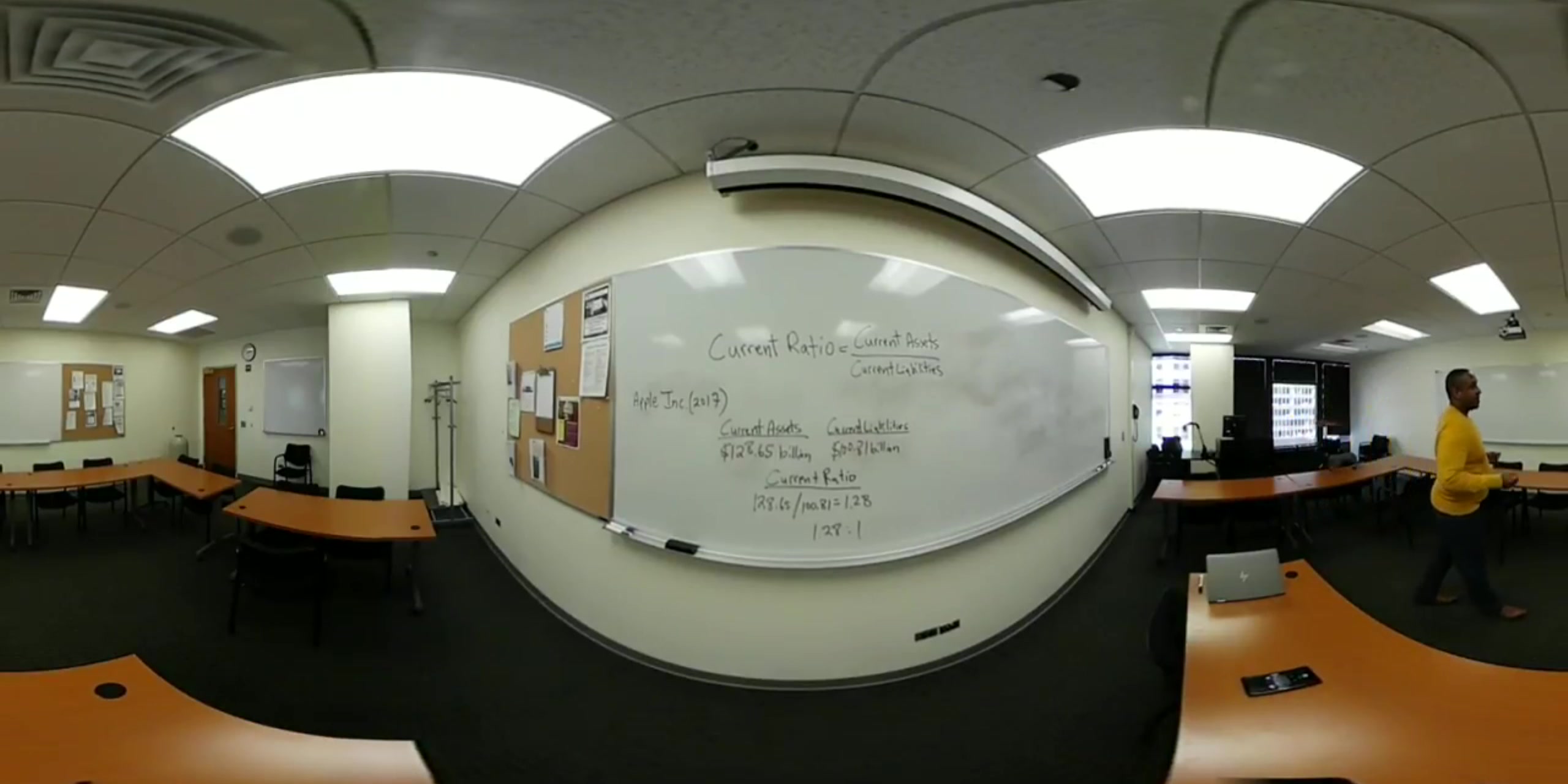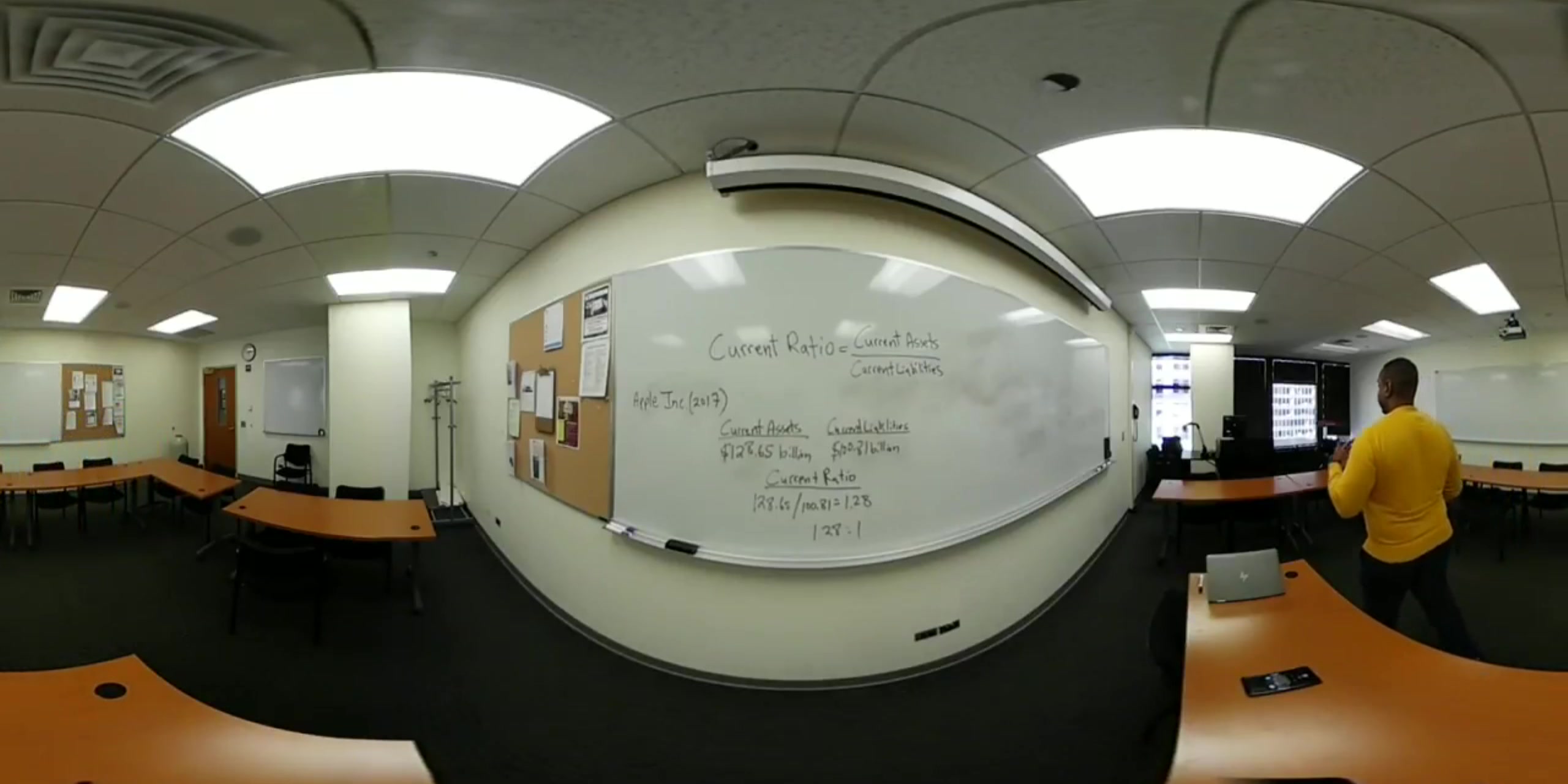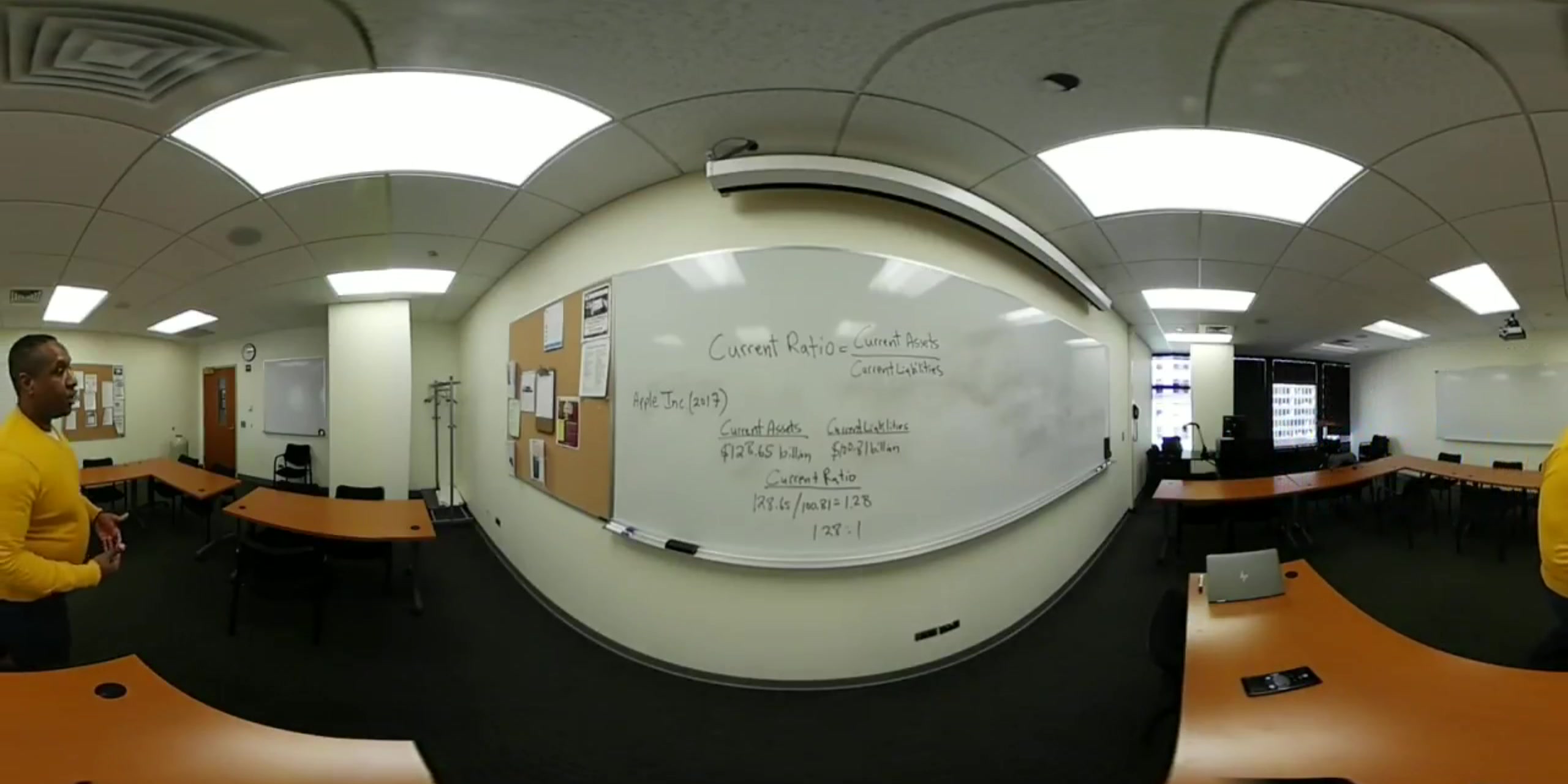That means for every dollar of current liabilities, Apple actually has $1.28 of current assets, which means it can meet and exceed its current liabilities. This gives us a current ratio which is greater than $1.